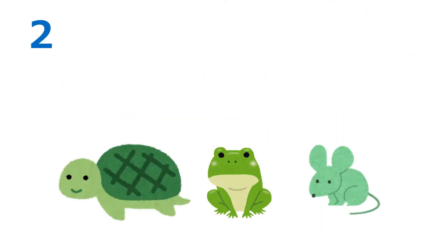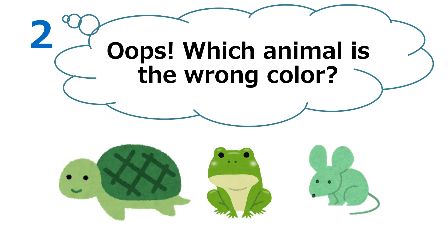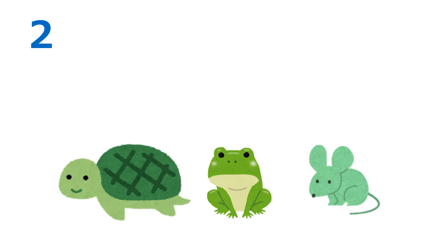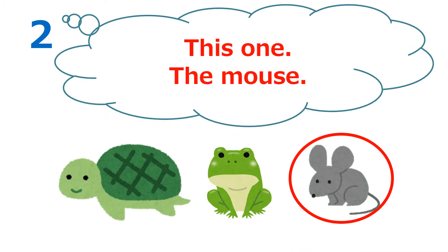Question 2. Which animal is the wrong color? Answer. Yes, this one. See? The mouse. The answer is the mouse.